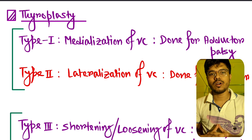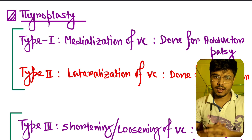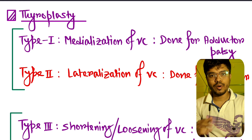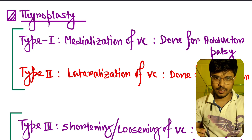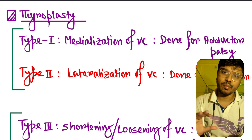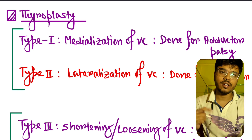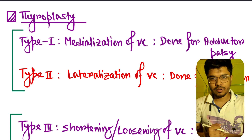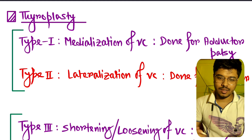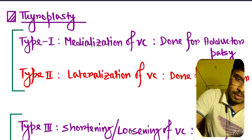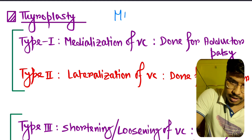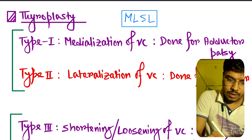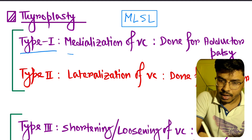Hi guys, today we talk about various types of thyroplasty. Thyroplasty is a surgical treatment option for vocal cord paralysis. There are four types: Type 1, Type 2, Type 3, and Type 4. These types are important for the exam. Just remember this four-letter mnemonic: MLSL.